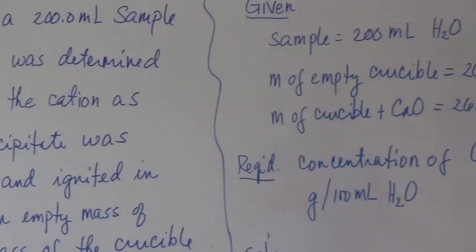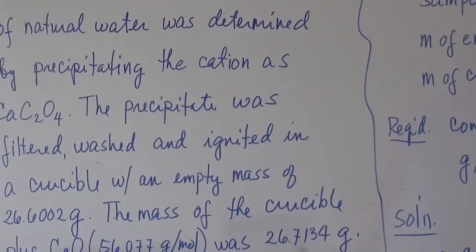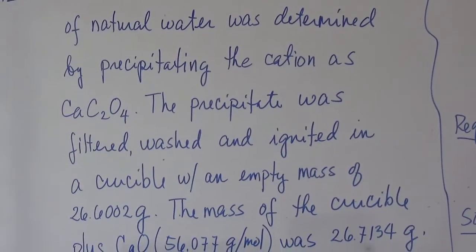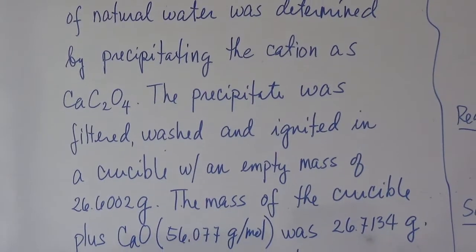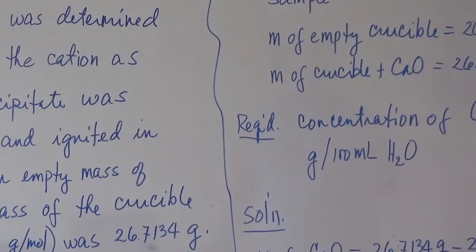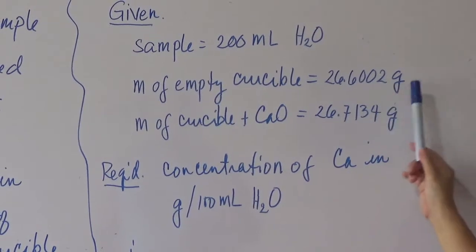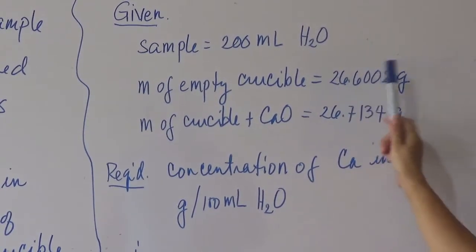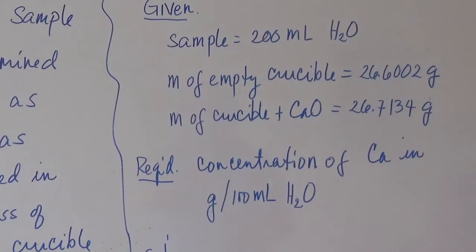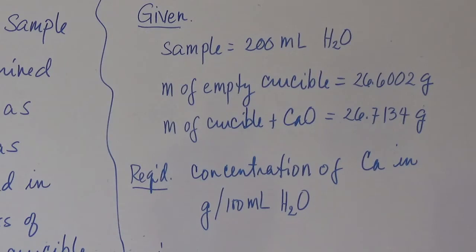After the precipitation process, it is filtered, then washed to remove contaminants, and then dried by igniting until a constant mass is achieved. The precipitate is placed in a crucible, since crucibles resist very high temperatures. The empty crucible mass is 26.6002 g — note it is recorded to 4 decimal places because an analytical balance can read to ±0.0001 g.